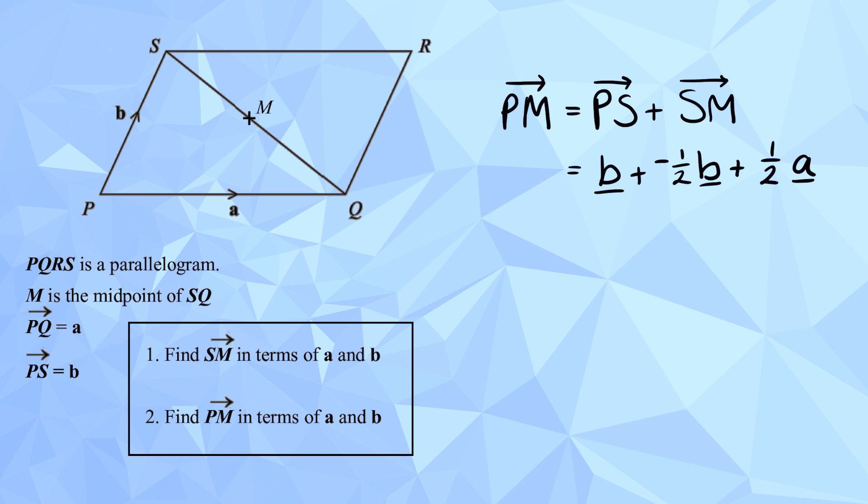And so, if we add all that lot together, so we have b, and then we're adding negative half b. Negative half b, and positive half a. Okay. If you add a negative, it's just the same as taking away. So, we've got b, take away half b, basically. So, we end up with half b, add half a. Okay.